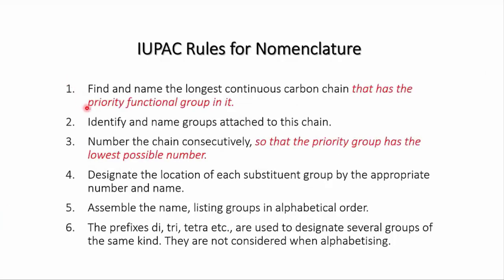First, when you find and name the longest carbon chain, it must have the functional group in it. This could mean that it isn't actually the longest possible carbon chain. The second amendment is that when you number the main chain, the functional group must be given the lowest possible number.